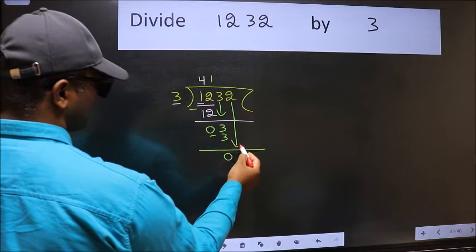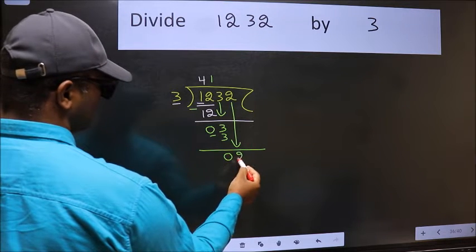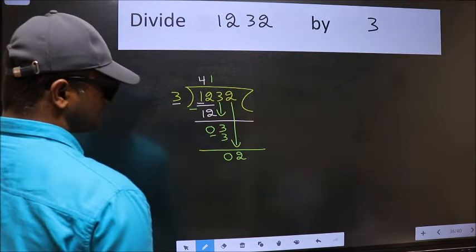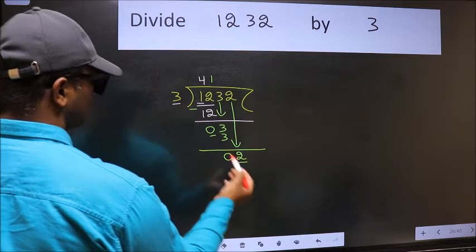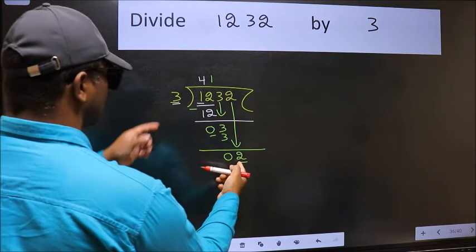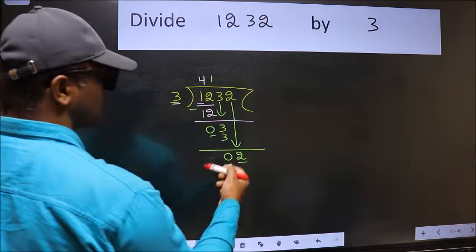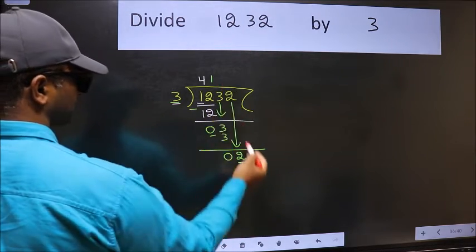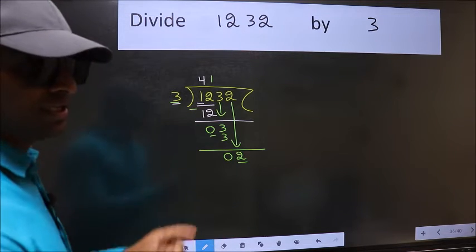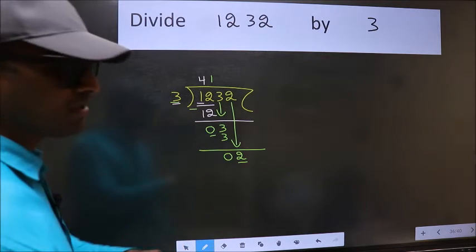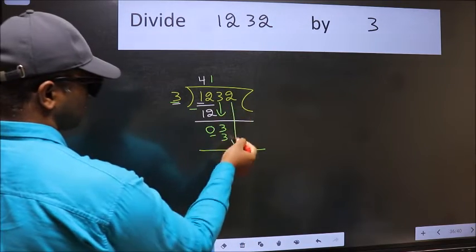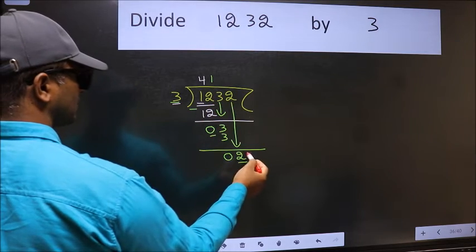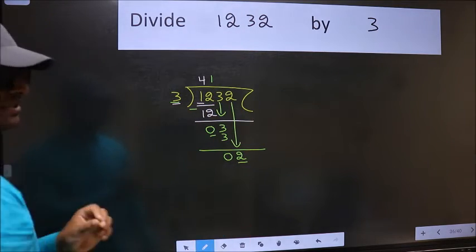After this, bring down the beside number. So 2 down. After this step, the mistake happens. And the mistake is this: here we have 2 and here 3. 2 is smaller than 3, so what many do is they directly put dot, take 0. Which is wrong. Why is it wrong? Because just now you brought this number down, and in the same step you want to put dot, take 0, which is wrong.